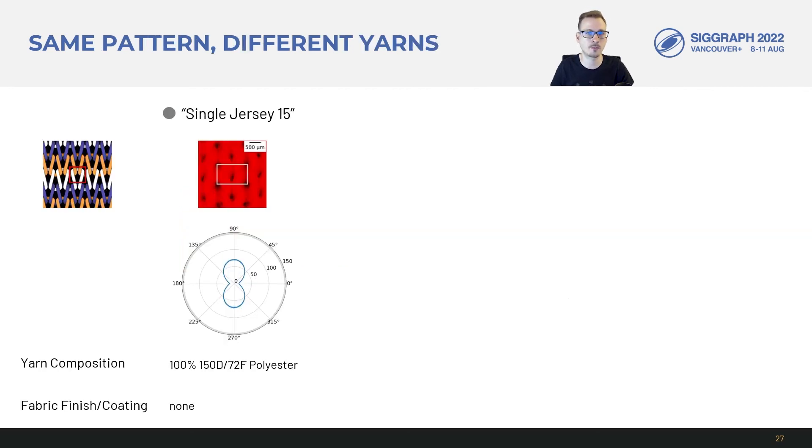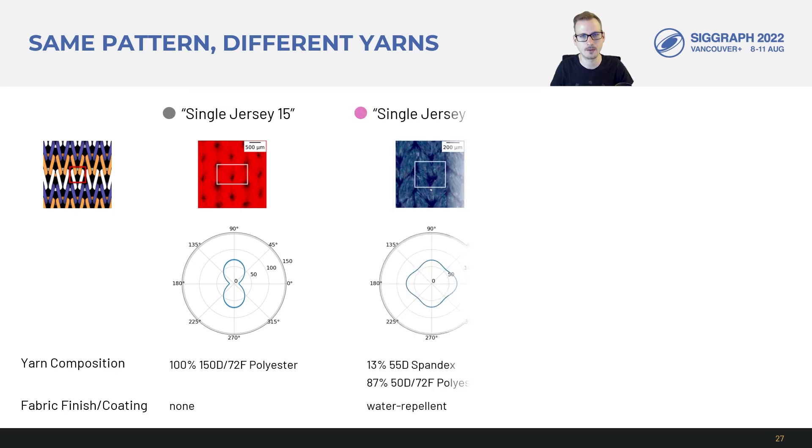Finally we can compare fabrics that have the same yarn pattern but different yarn compositions and fabric coatings. The first fabric is the polyester only version we've seen before.